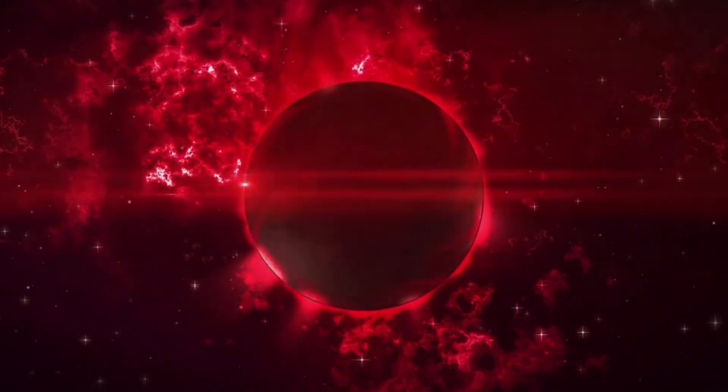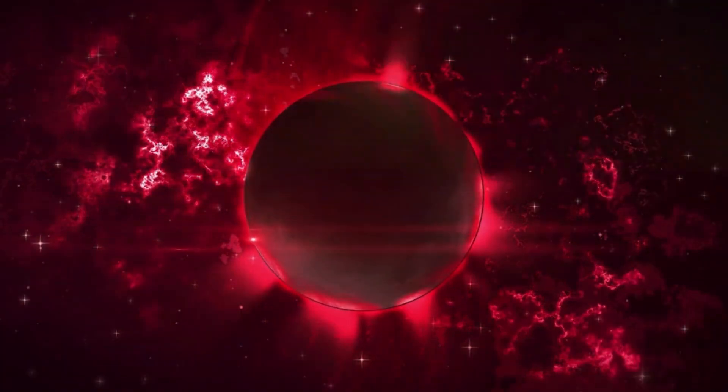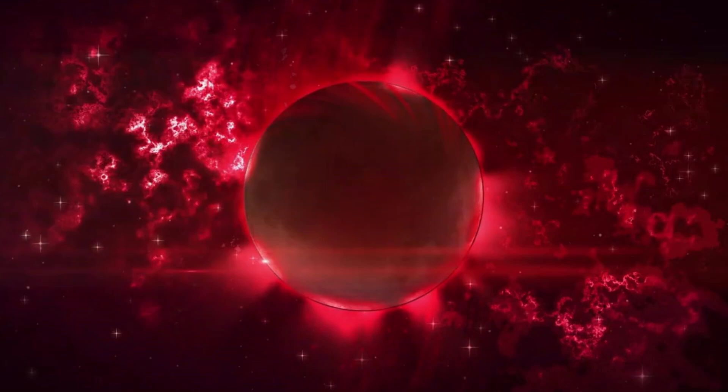A lunar eclipse occurs when the Earth moves between the sun and the moon, casting its shadow on the lunar surface. This alignment causes the moon to pass through Earth's shadow, resulting in its gradual darkening.